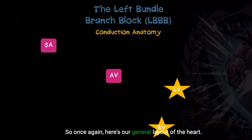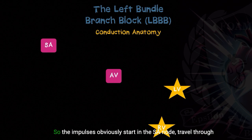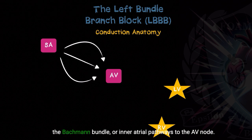So once again, here's our general layout of the heart: SA node, AV node, right ventricle, left ventricle. The impulses obviously start in the SA node, travel through the Bachmann bundle or inter-atrial pathways to the AV node.